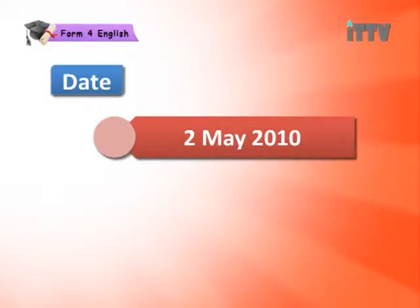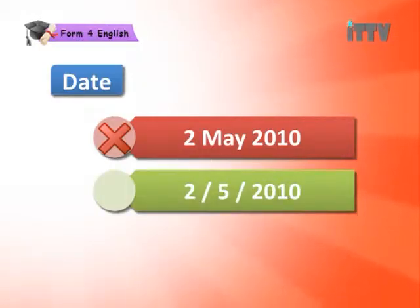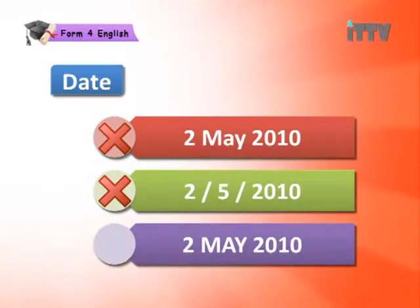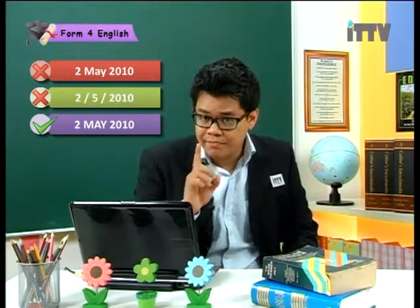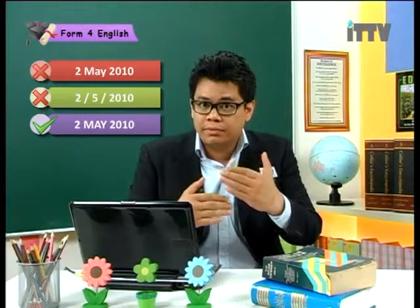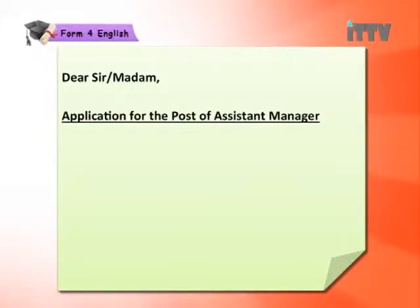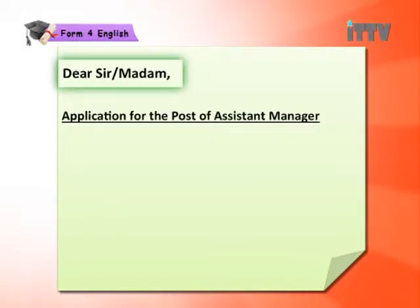The way you write your date is also very important. '2 May' with a capital M followed by lowercase — that is wrong. '2/5/2010' using slashes — that is also wrong. The correct way is '2 MAY 2010' with MAY written in all capital letters. Remember this because it is part of the format and all part of the marks you need.